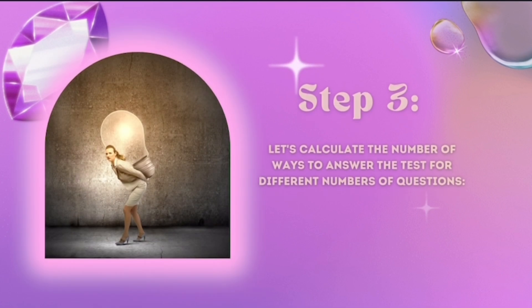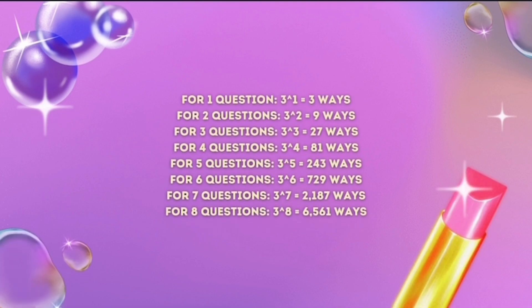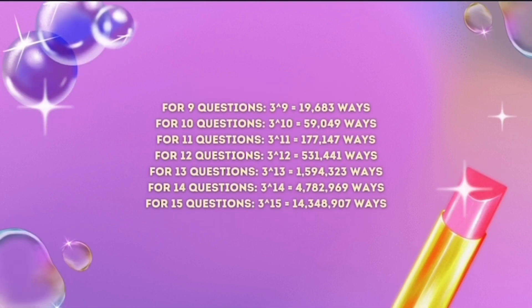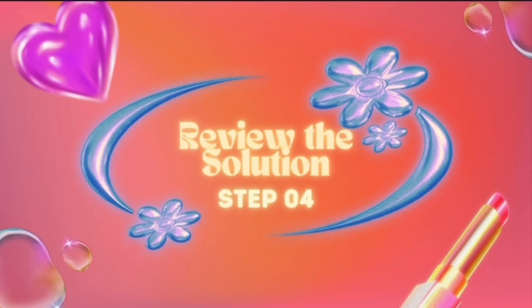We now carry out this plan. Let's calculate the number of ways to answer the test for different numbers of questions, starting with 3 raised to 1 for one question, 3 raised to 2 for two questions, and so on up to the 15th question, which is 3 raised to 15. That equals 14,348,907 ways.